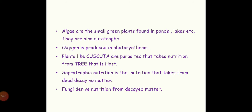Saprotrophic nutrition is the nutrition that is taken from dead decaying matter. We have seen autotrophic nutrition and heterotrophic nutrition — autotrophic means the organism can prepare its own food, and heterotrophic means it depends on others. Organisms that take nutrients from dead decaying matter are called saprophytes, and their mode of nutrition is called saprotrophic nutrition. For example, fungi and mushroom.